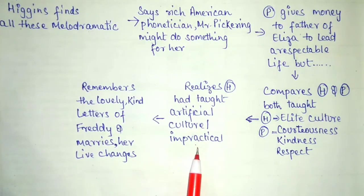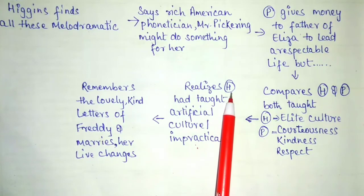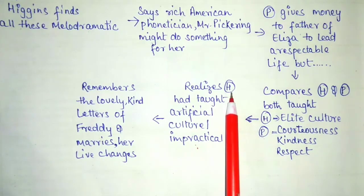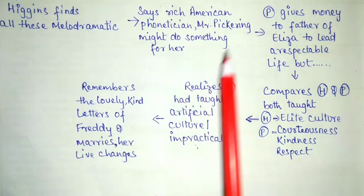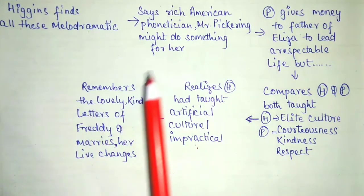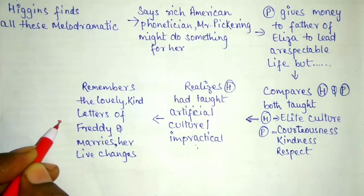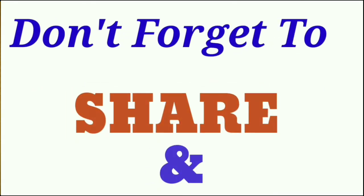At last, Eliza finds that she was in search of kindness, which she received from Freddie, who used to write lovely and kind letters to her while she was under Higgins's training. She finds true love finally, and with the money of Pickering she is able to lead a respectable life. So it was not Higgins but Pickering who truly changed the life of the protagonist. Higgins can be seen as the antagonist. We will meet in the next video — I hope this helps in your examination.